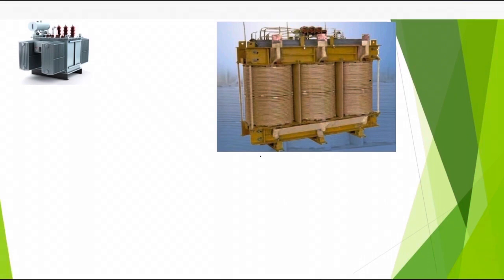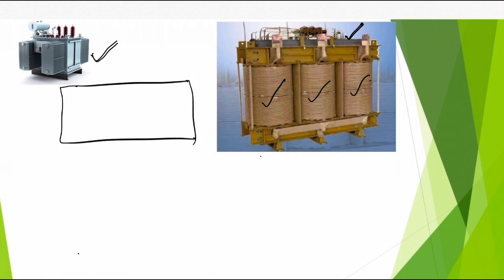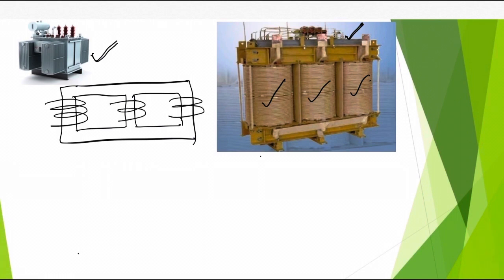Let me tell you some basics about a transformer. This is a transformer. When we open this transformer, we can find two main parts. One is the transformer core and the other is transformer windings. The actual shape of a transformer core is shown here, and around this core we can find windings. This transformer core is made up of steel, and this steel is not a single structure — it is made up of several thin laminations.